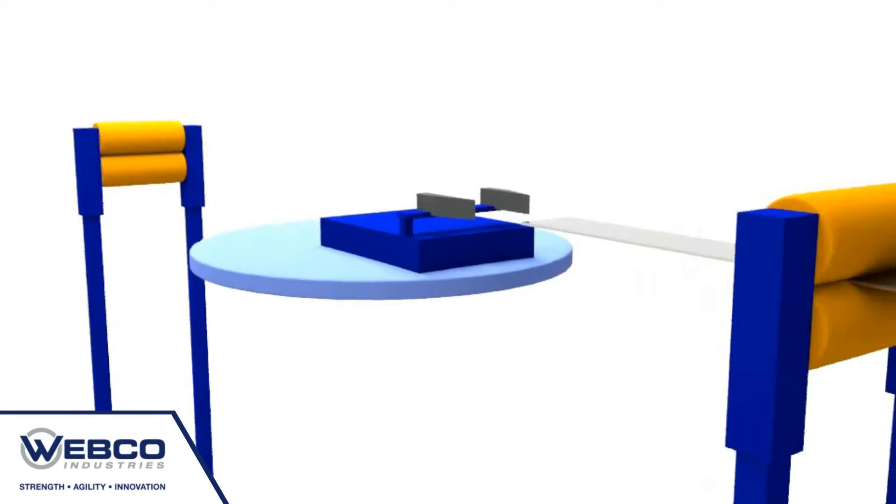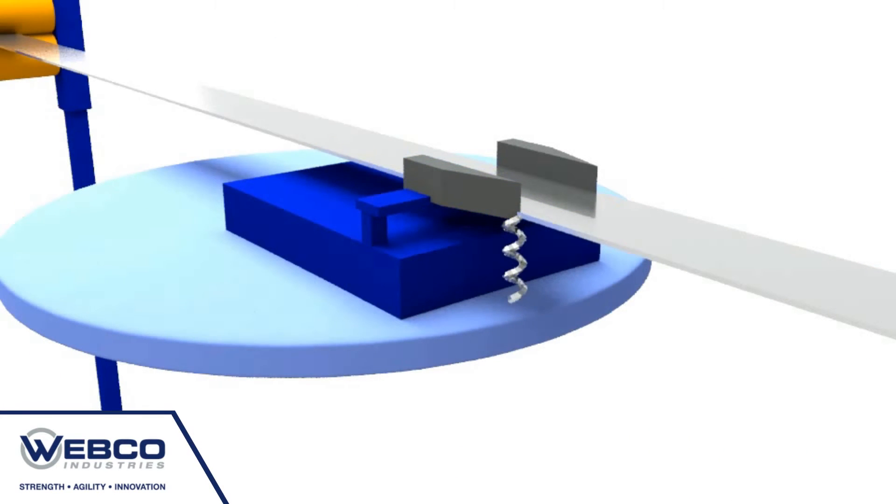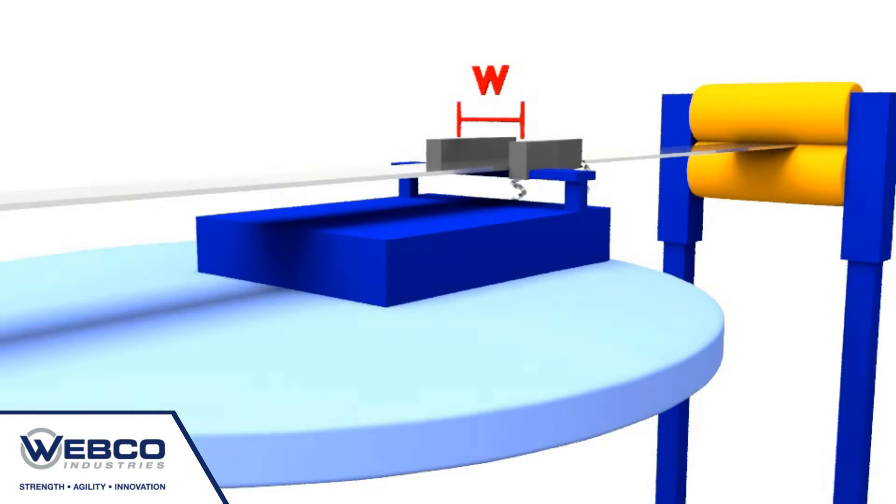This process promotes strip edges that are square, clean, and precisely shaped prior to passing through the weld box where they are ultimately joined by autogenous laser welding. Skiving assists in controlling the width and quality of the resulting strip edge.